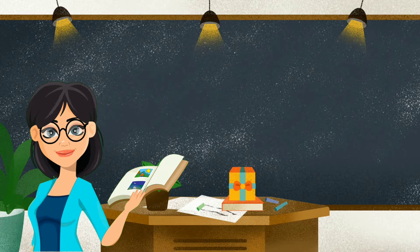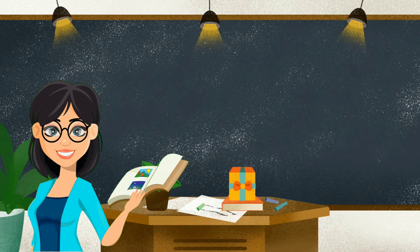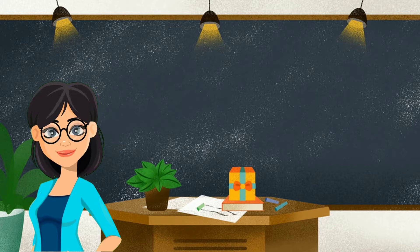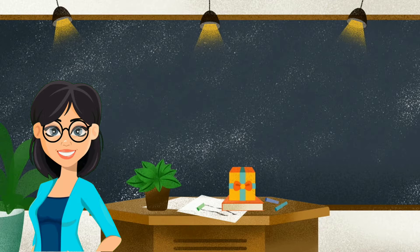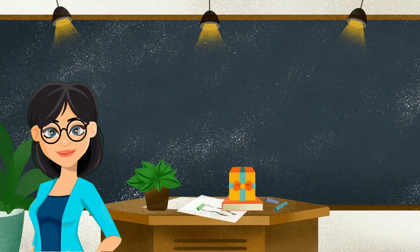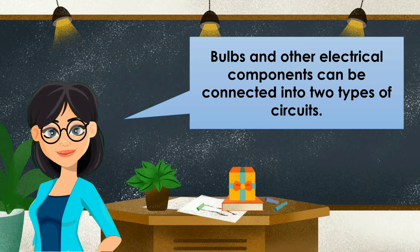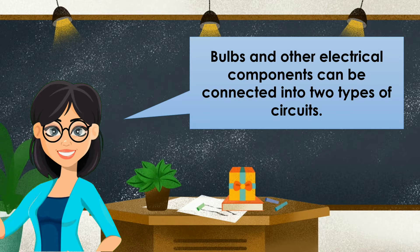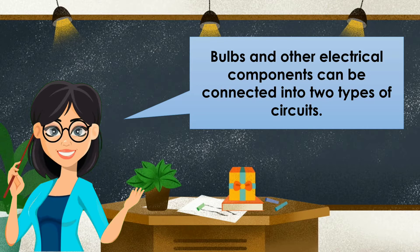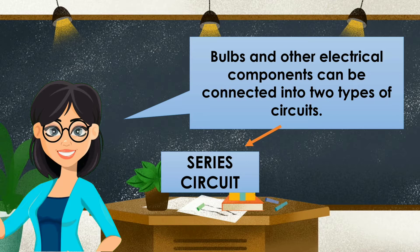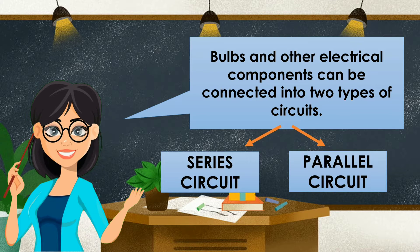But before we learn about the brightness of bulbs, let us reflect on what we have learned in our previous lesson. We have learned about two types of different circuits. Bulbs and other electrical components can be connected into two types of circuits. The first one is series circuit and the second one is parallel circuit.